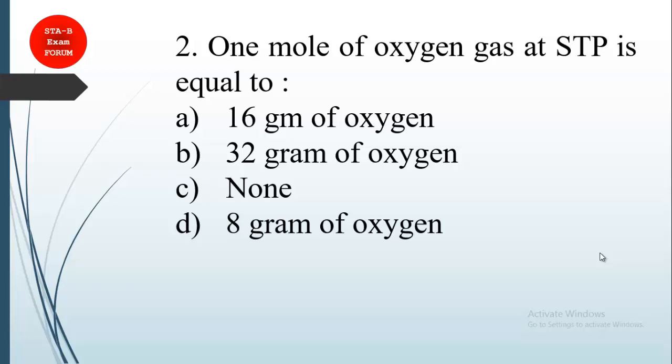We have 16 grams in one oxygen atom. For O2, we have 32 grams. So the correct answer is 32 grams of oxygen.